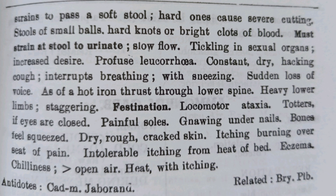Next, acting on the spinal cord: it produces a sensation as of a hot iron thrust through the lower spine. Heavy lower limbs, staggering. Festination — meaning an involuntary inclination to hurry in walking, as in Parkinson's disease. The patient takes small, rapid, involuntary steps. The patient cannot walk straight with eyes closed and staggers. Locomotor Ataxia — totters if eyes are closed.